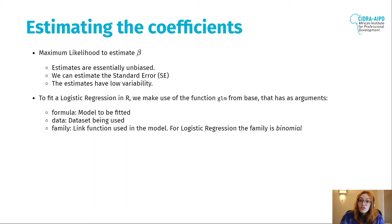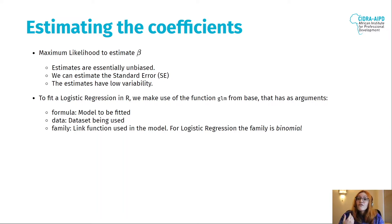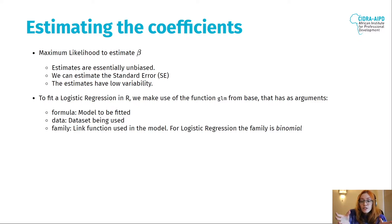The glm function is from base R, so we don't need to install anything beforehand. It has three main arguments: the formula — that is the model we're going to fit; the data — that is the dataset we're going to use; and the family — where the family for logistic regression is the most important argument. You need to pass the link function, and for logistic regression the link function is binomial.